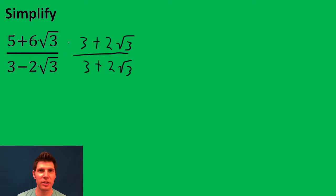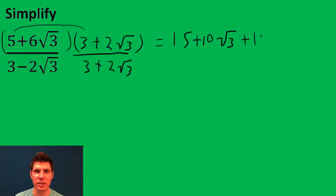Now we're going to multiply top and bottom by this. The top, we're going to distribute the 5 to both and the 6 root 3 to both. 5 times 3 is 15. 5 times 2 root 3 is 10 root 3. Then 6 root 3 times 3 is 18 root 3. And 6 root 3 times 2 root 3 is 12 root 9.